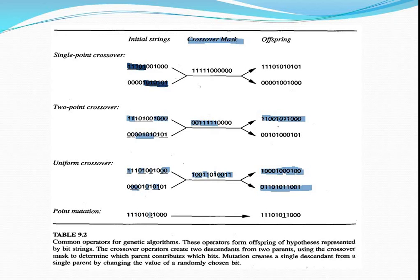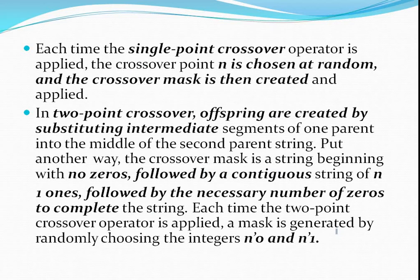For example, a random bit is chosen — in this case its value is 0 — and it is changed to 1. Whatever the resulting string is, that is considered the new offspring. Generally, mutation is applied after the crossover operator.